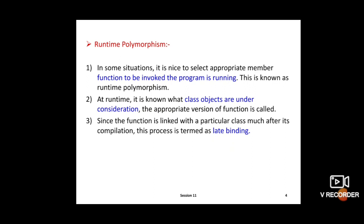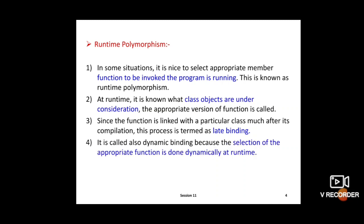Since the function is linked with a particular class much later after compilation, this process is called late binding. Compile time process is called early binding, and this process is called late binding. It is also called dynamic binding because the selection of the appropriate function is done dynamically at runtime.